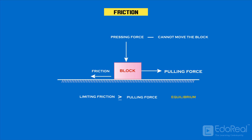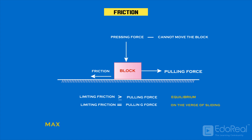And when the applied force reaches the maximum frictional force, the object will be on the verge of sliding. The maximum frictional force developed by the surfaces in contact, just before the body moves — that is, on the verge of motion — is called limiting friction.